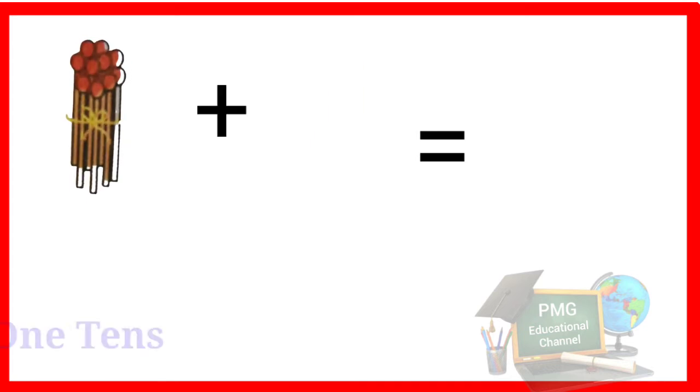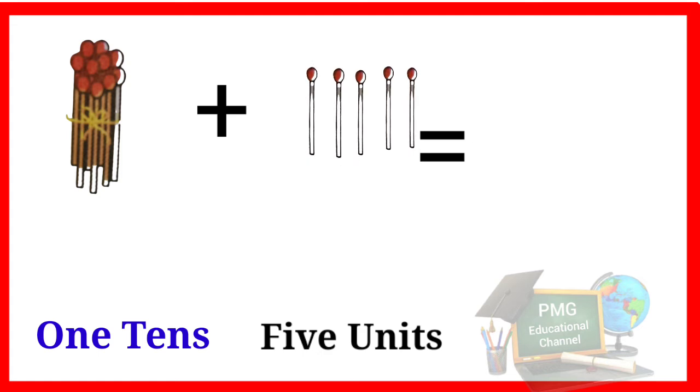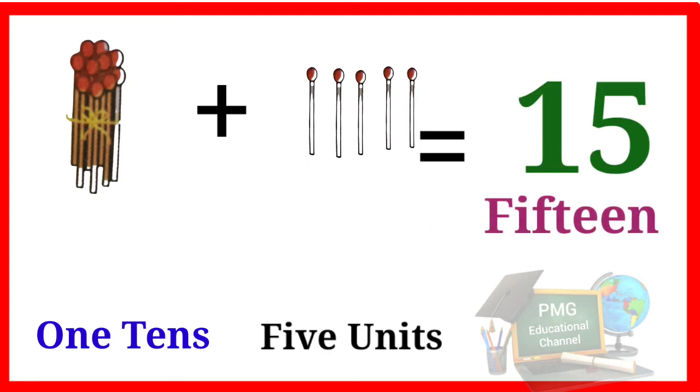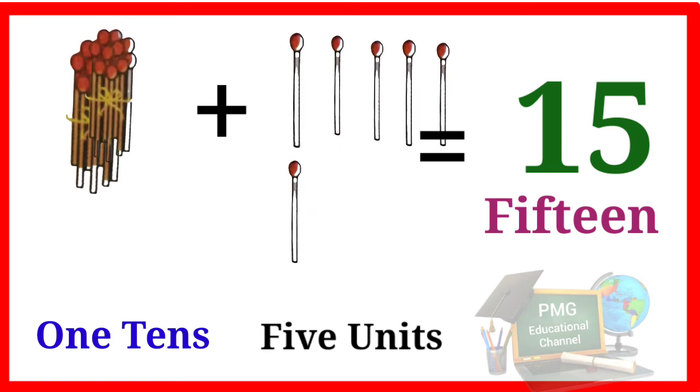1 tenth, 4 units. Then 1 tenth, 5 units numbers become 15. Here is 15. 1 tenth, 5 units, 15.